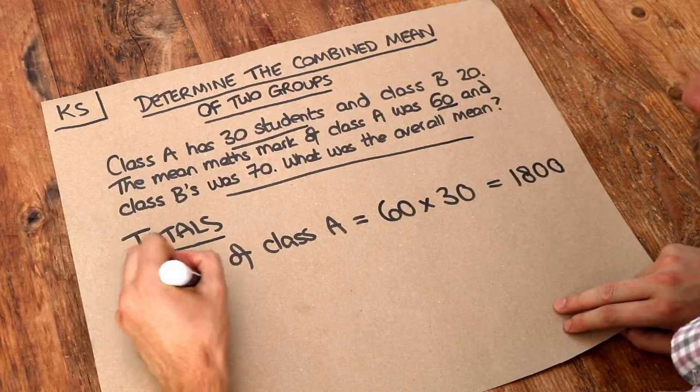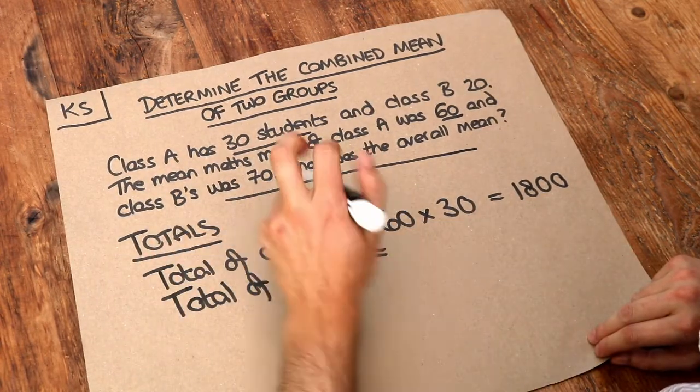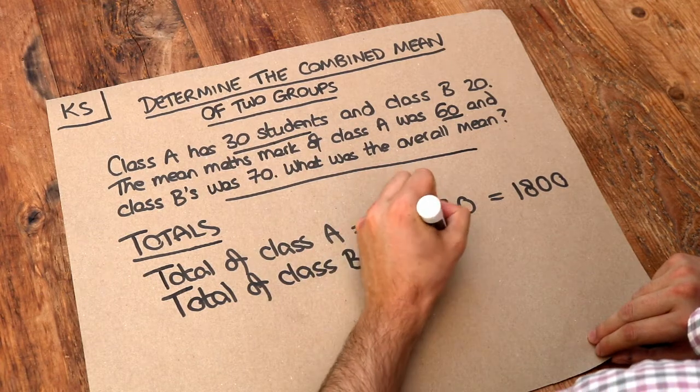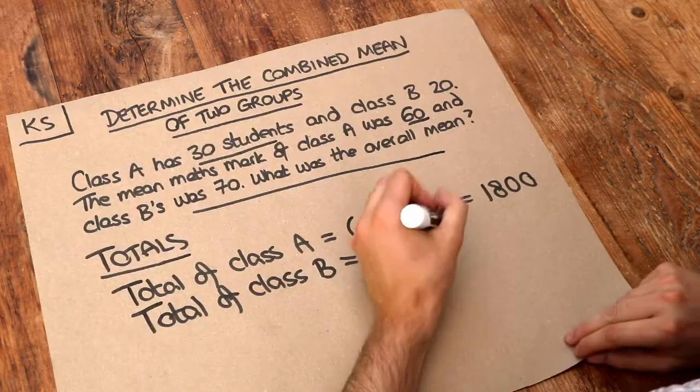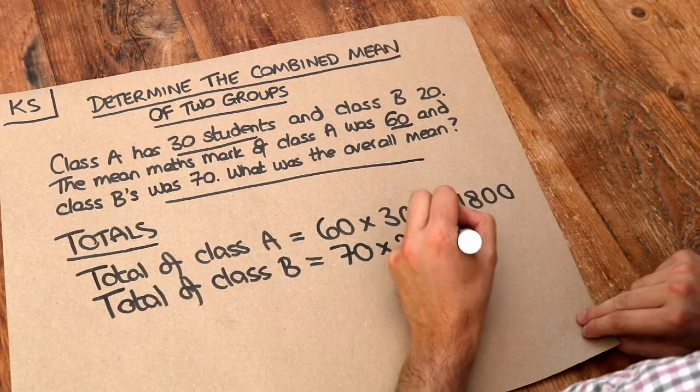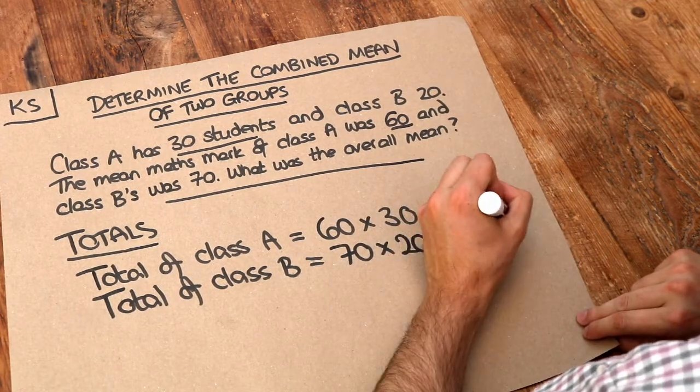Let's simply do the total of class B. Their average mark, their mean mark was 70 and we times it by how many students there were which was 20 and then if we times those together we get 1,400.